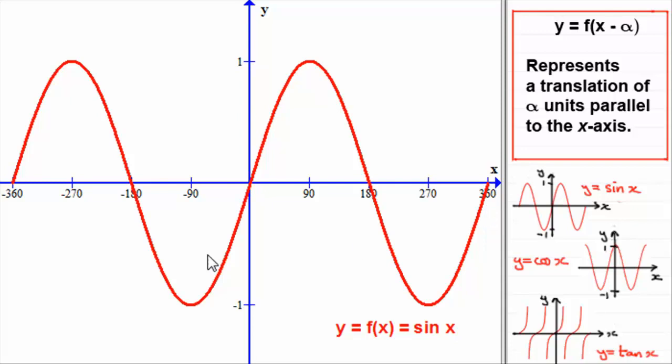Now if we look at this particular transformation, y equals f of x minus 45, we replace any x in sin x with x minus 45, giving us sin of x minus 45. When you compare x minus 45 to x minus alpha, you can see that alpha is 45, which represents a translation of 45 degrees parallel to the x-axis.